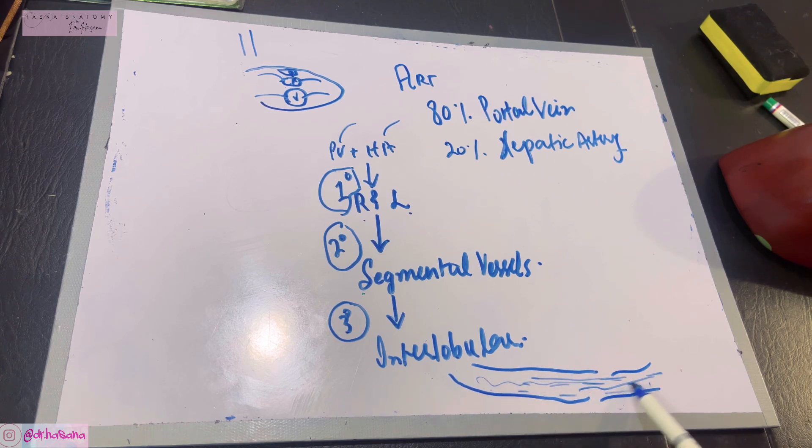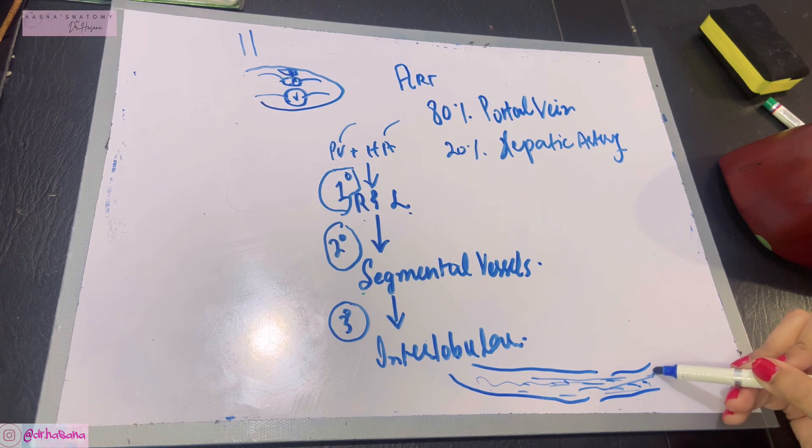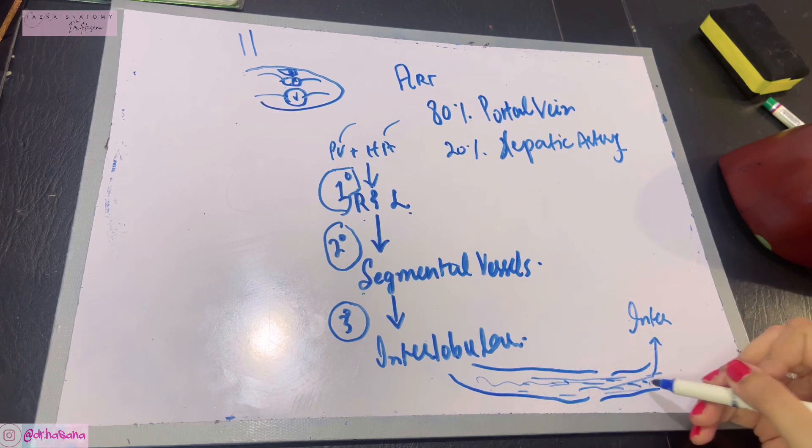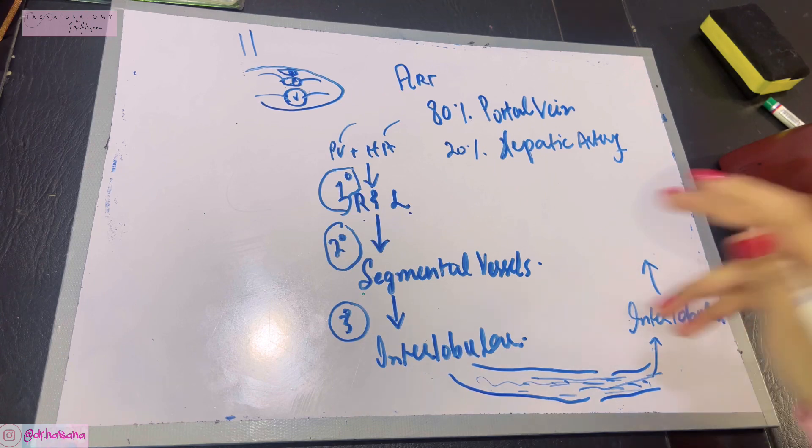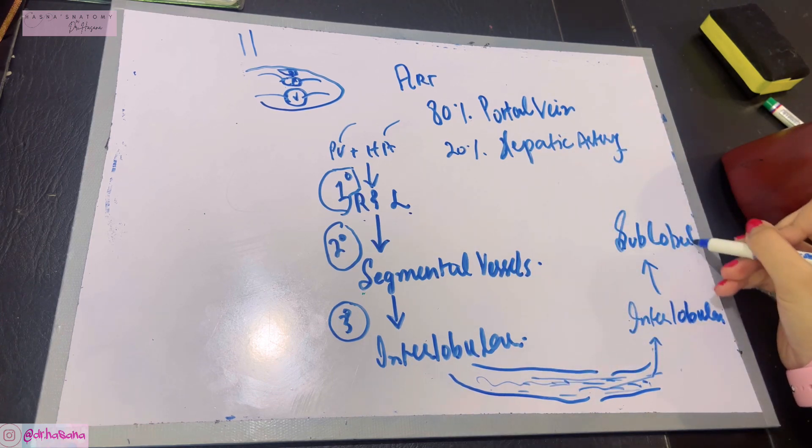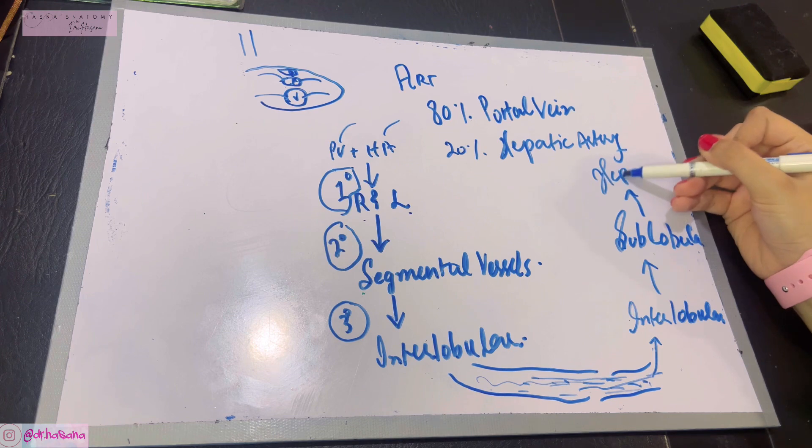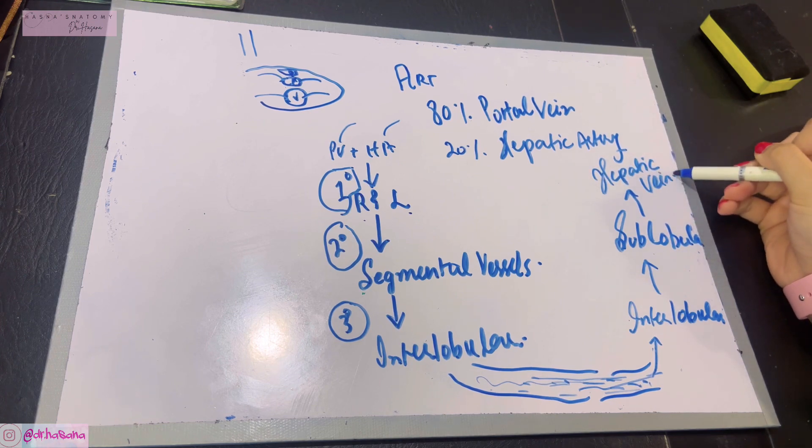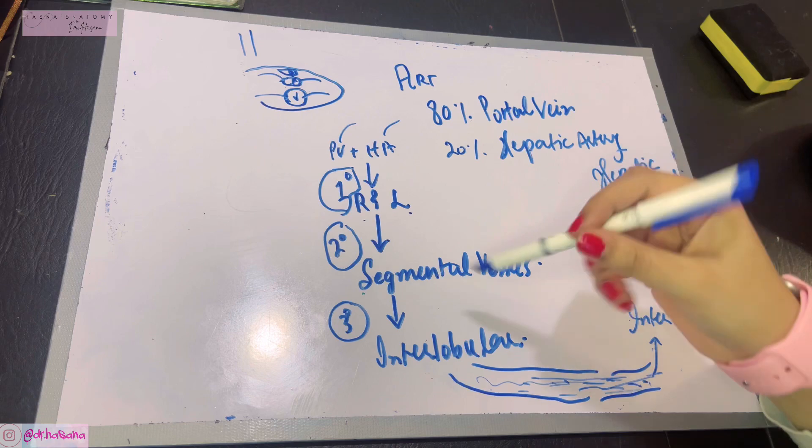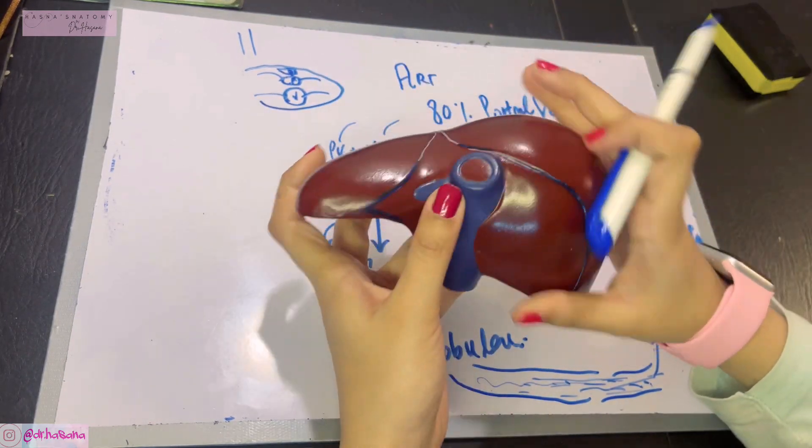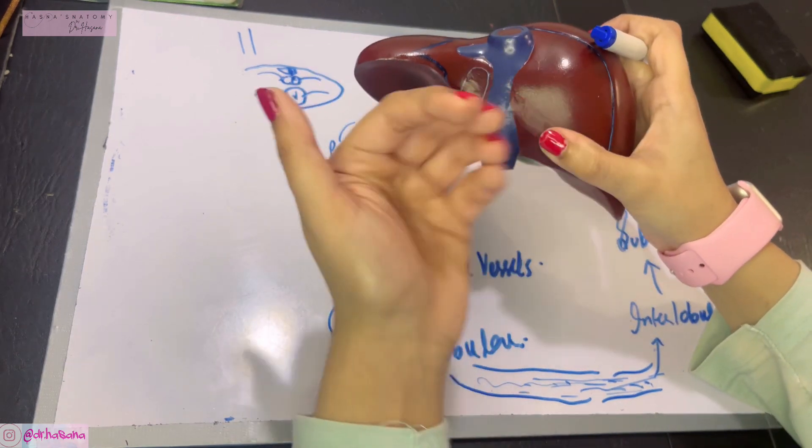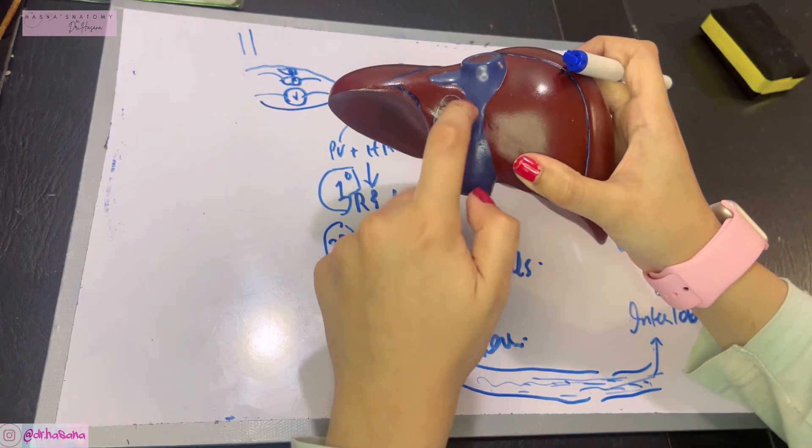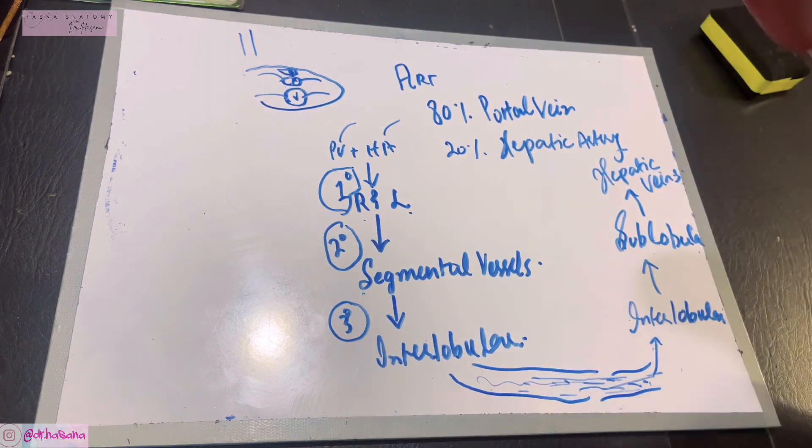For venous drainage, the hepatic sinusoids drain into interlobular veins, which unite into the sublobular veins. Finally, they unite to form the hepatic veins. The hepatic veins drain the entire blood where the inferior vena cava lies on the posterior part. These hepatic veins pierce the floor of the IVC groove and directly drain into the inferior vena cava.